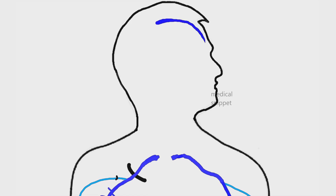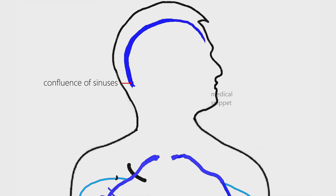The superior sagittal sinus begins at the crista galli, passes backward, and on reaching the internal occipital protuberance, deviates to the right side to form the confluence of sinuses. It then continues as the right transverse sinus. The confluence of sinuses also receives blood from the occipital sinus.